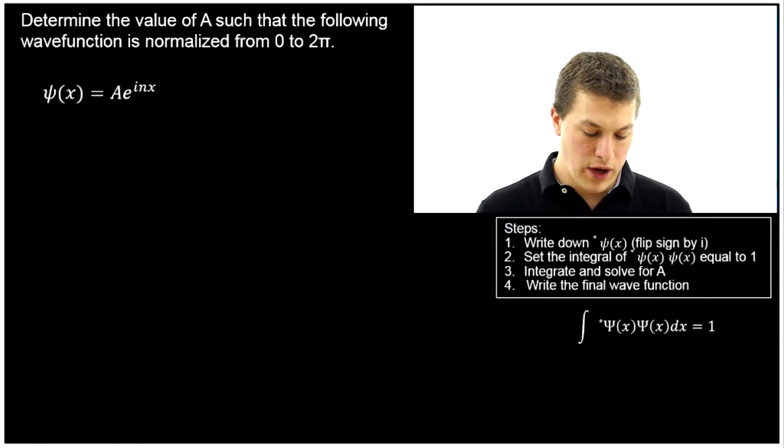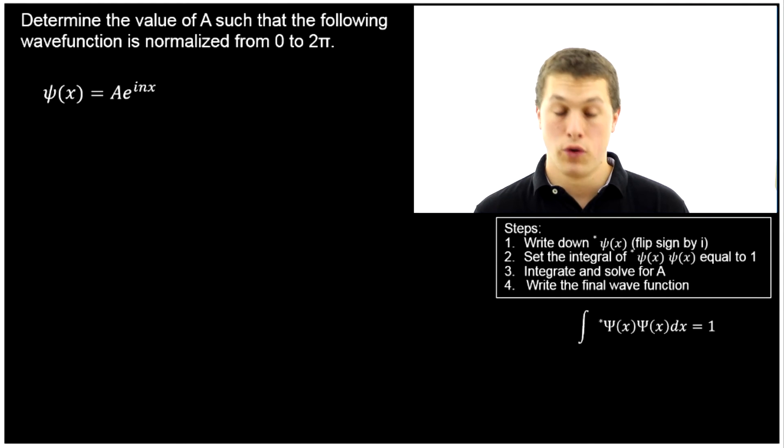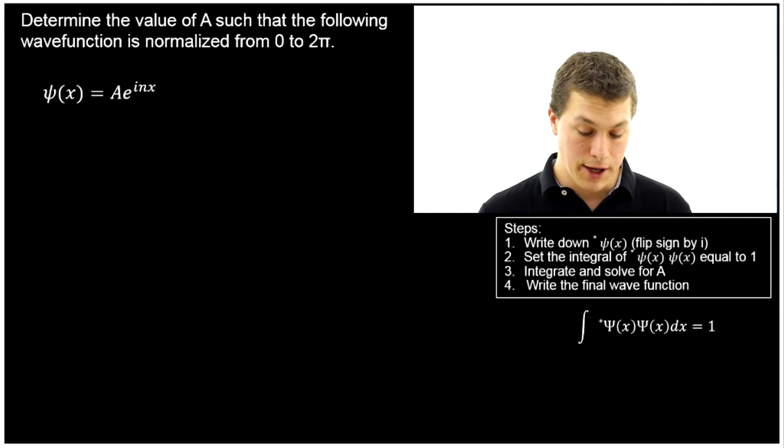Here we've been given the wave function Ae^(inx). And we want to normalize that. Our problem says determine the value of A such that the following wave function is normalized from 0 to 2π. So that's the bounds of our integral. It's telling us the range over which the wave function is defined.